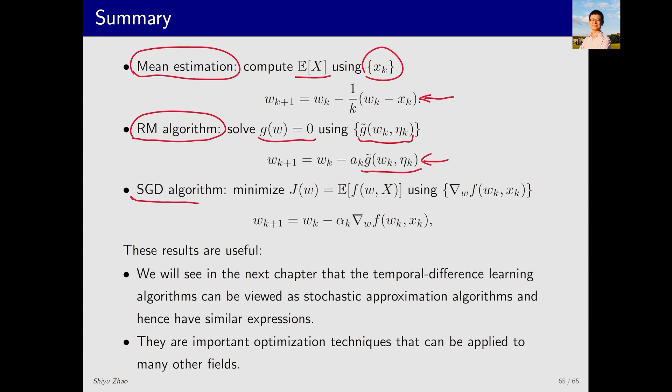Next, we introduce the stochastic gradient descent algorithm. What problem does this algorithm solve? It deals with optimizing an objective function that looks like this, where we can sample its gradient. Using this stochastic gradient, W_k can converge to the optimal solution W*.